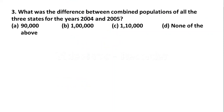Question 3: What was the difference between the combined populations of all three states for the year 2004 and 2005? Options: A: 90,000, B: 1 lakh, C: 1 lakh 10,000, D: none of the above.